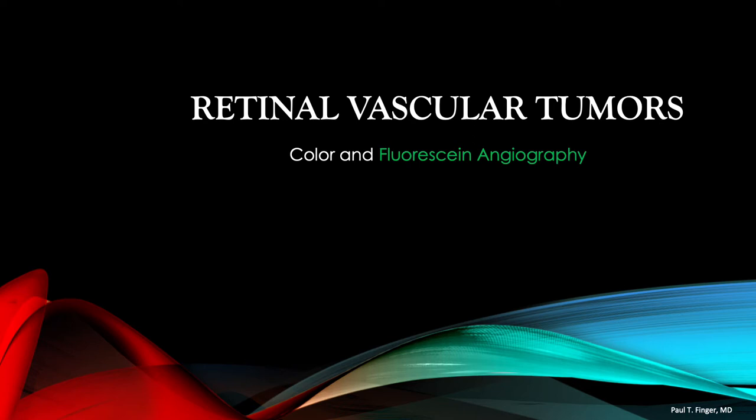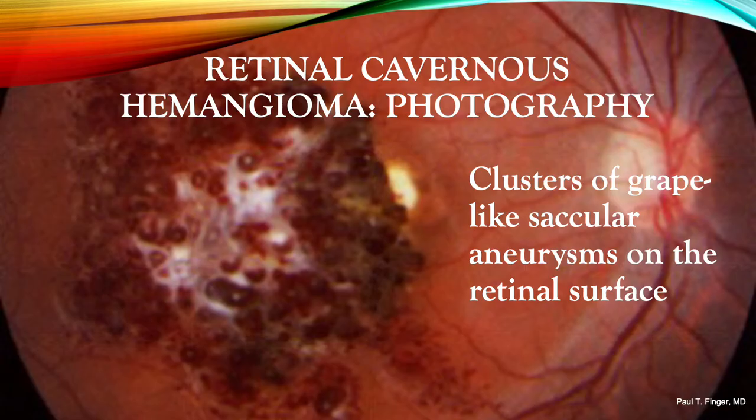Because they're retinal, we don't use indocyanine green angiography. Retinal tumors are typically seen anterior to the retinal pigment epithelium, so their surface and intrinsic vascular patterns are easily viewed. You can see why retinal cavernous hemangiomas have been described as a cluster of grapes — these grapes are actually large, low-flow, saccular aneurysms.